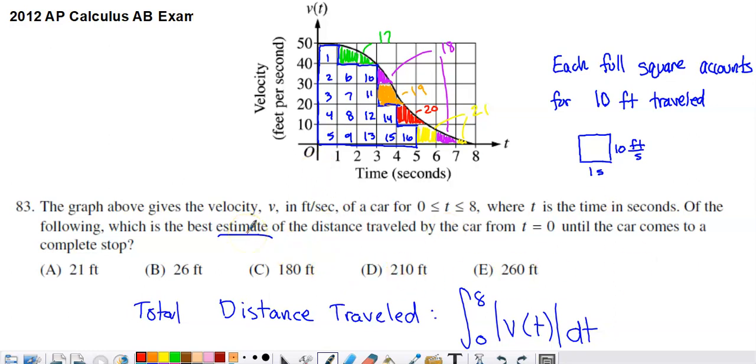So of the following, which is the best estimate of the distance traveled by the car from time zero until the car comes to a complete stop. So in order to determine the total number of feet, if you look at all of these options here, they're all being measured in feet. To determine the total number of feet that the car is going to travel over the course of the time frame from time zero to time eight,